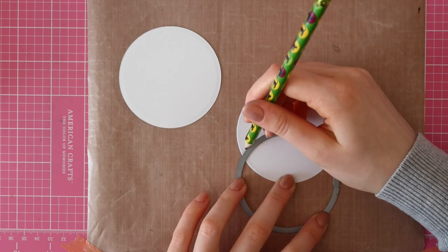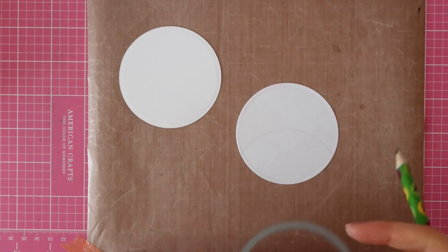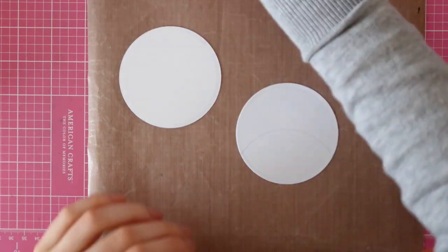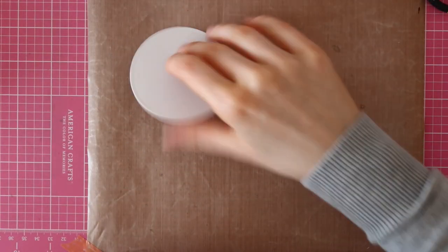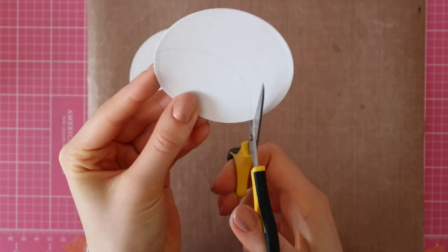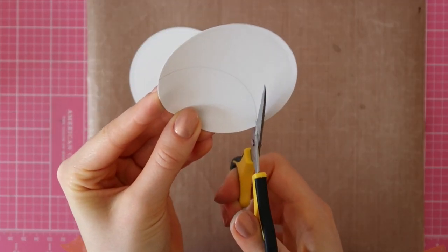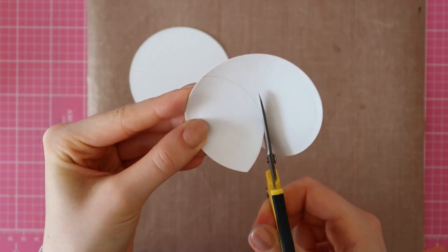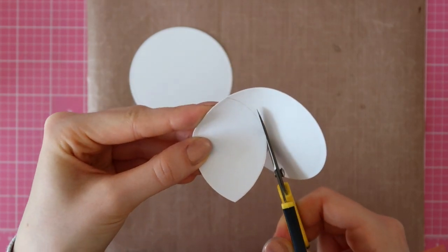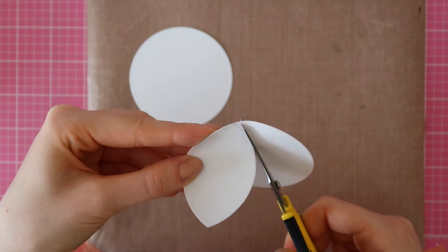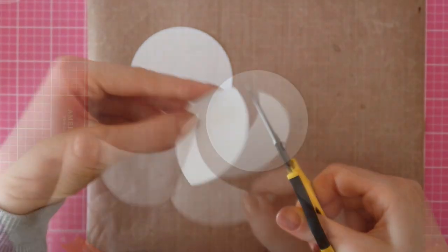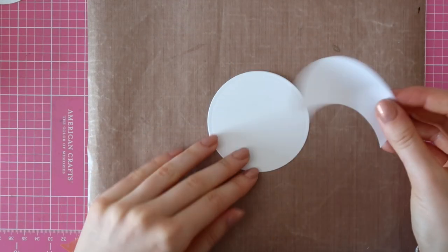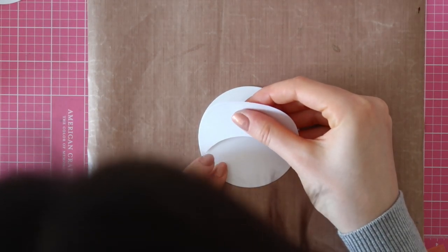I'm using my circle die and a pencil to trace the grass hill and the sky background. I'm creating my own mask and I'm cutting this out using my EK Success Color B scissors. Of course, you can also use an arched die to create this hill, but as you can see, you can also just use your circle die and the pencil to create your own mask.